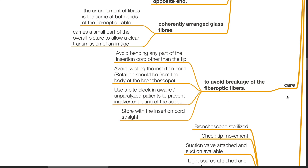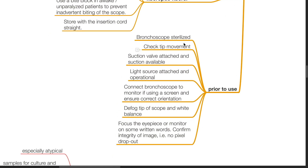Care of the flexible bronchoscope: to avoid breakage of the fiber optic fibers, avoid bending any part of the insertion cord other than the tip; avoid twisting the insertion cord. Rotation should be from the body of the bronchoscope. Use a bite block in awake or unparalyzed patients to prevent biting of the scope. Store with the insertion cord straight. Prior to use: bronchoscope sterilized, check tip movement, suction valve attached and suction available, light source attached and operational. Connect to monitor if using a screen and ensure correct orientation. Deflect the tip of the scope and adjust white balance. Focus the eyepiece or monitor on some written words and confirm the integrity of the image.